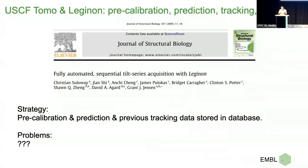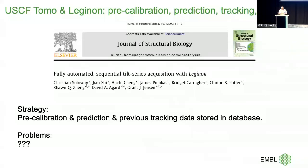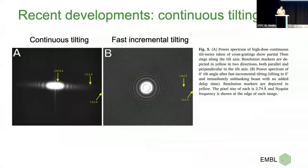Recently, Ken Jensen's lab tried to speed things up. They had a new Krios with a single tilt holder — the old Krios had a dual-axis holder but nobody was doing dual-axis tomo anyway — and it turned out to be much more stable. They explored continuous tilt, basically imaging while tilting the stage, like in micro-ED. But you get tremendous vibrations from the continuous tilting, visible in Fourier space as a massive cutoff.